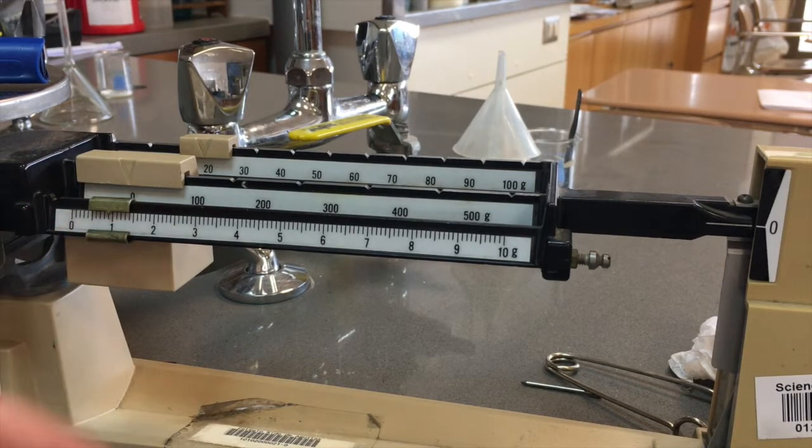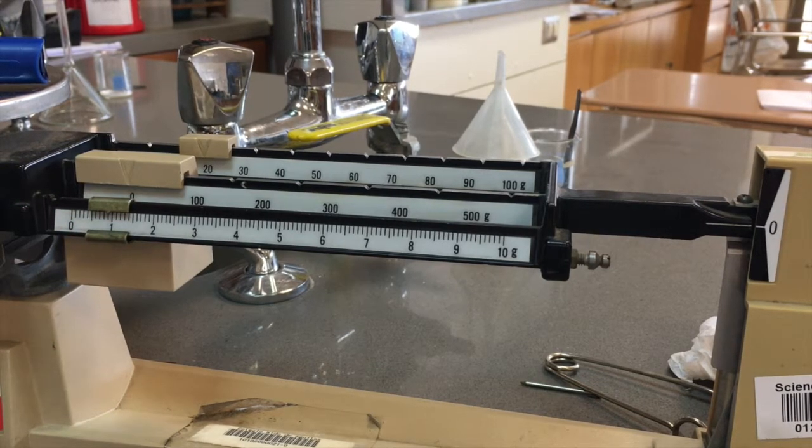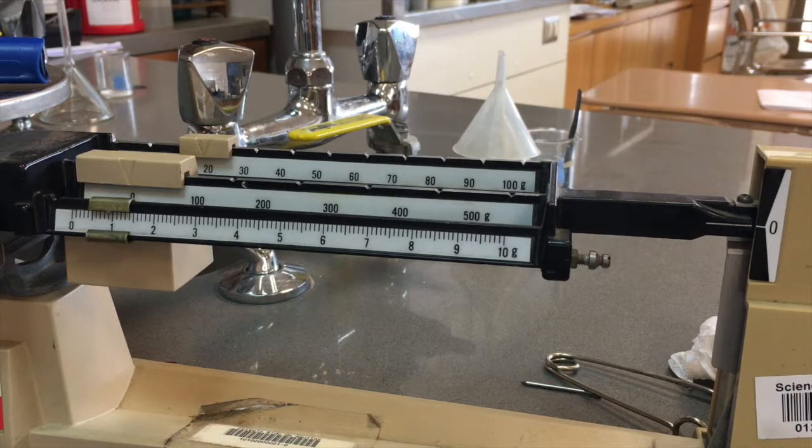You want to make sure that you don't get any systematic error. Systematic error is when you always make measurements that are either too high or too low. You want those lines matched up.